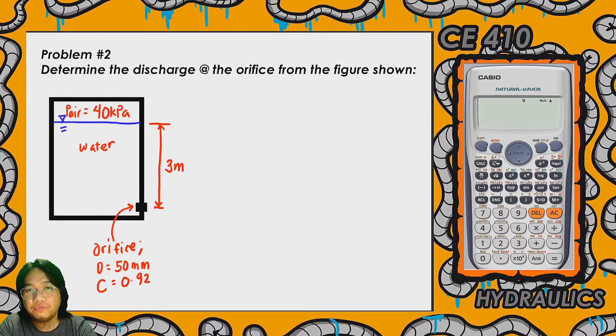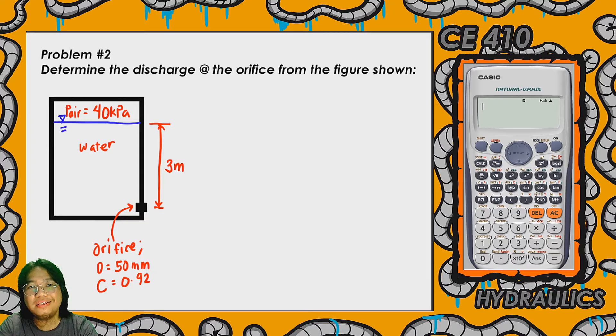Hi, welcome to another video for CA410 or hydraulics. In this video we're gonna be solving again another constant head orifice, and in this case the condition is still in steady flow. For those who didn't watch my video or my lecture in orifice, please see the link in the description below.